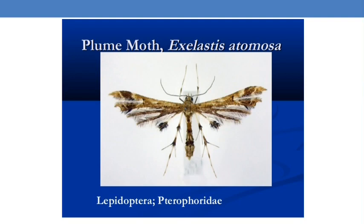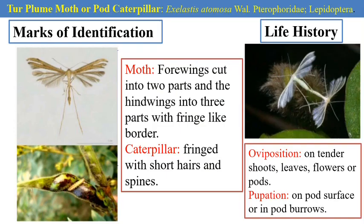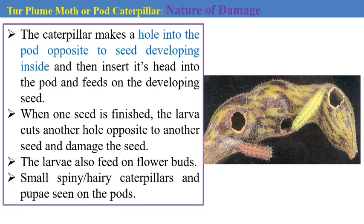The next pest is the tur plum moth, Exelastis atomosa — also a lepidopteran pest. A key mark of identification is that the four wings of the moth are cut into two parts, and the hind wings into three parts with a fringe-like border. The caterpillar is fringed with short hairs and spines — a spiny or hairy caterpillar. After male-female mating, the female moth lays eggs on tender shoots, leaves, flowers or the pods. Pupation occurs on the pod surfaces or in pod burrows.